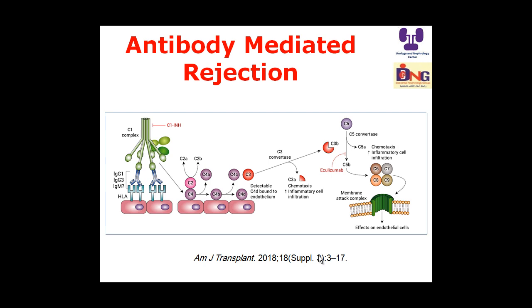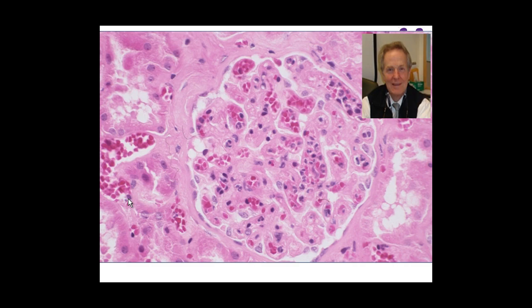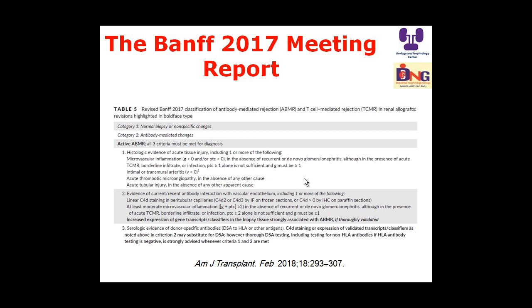Regarding active antibody mediated rejection: antibodies against HLA antigens stimulate complement activation, leading to a cascade of inflammation and pathology disrupting the graft. Hyper-acute rejection — where the graft is thrombosed immediately after anastomosis — is now rarely seen due to sophisticated immunological laboratory testing.